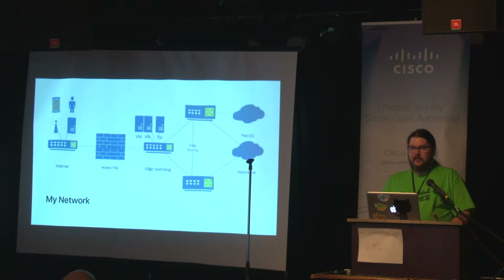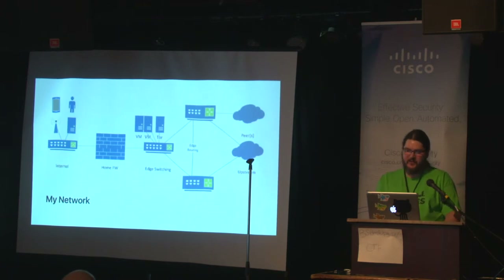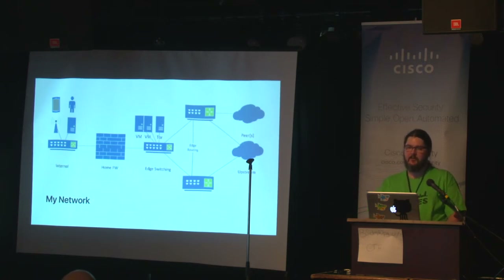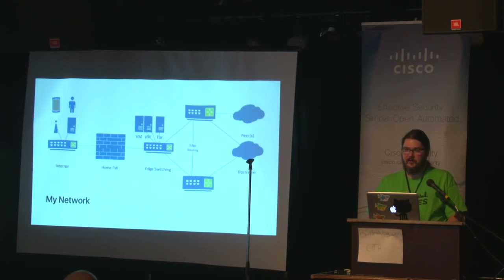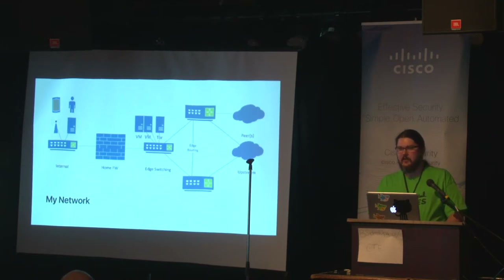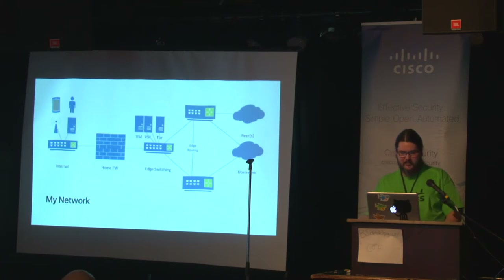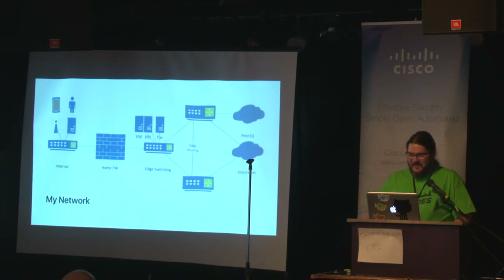My network is a mix of all those network types. I have one upstream, two routers both running BGP, and several BGP peers — mostly research-type peers rather than actual traffic. I have some edge switching where I run my own VM servers and Tor servers for the not-for-profit I'm part of, plus virtual connections to my home firewall which also runs BGP. I have about 10 IP addresses at home, and then there's my internal network — which I've simplified because it's almost embarrassing how complicated my home network is these days.